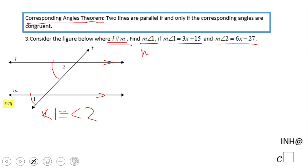Angle 1 is congruent with angle 2. Measure of angle 1 equals measure of angle 2. So basically now we have the equation 3x + 15 = 6x - 27.